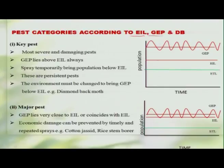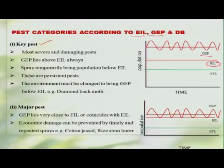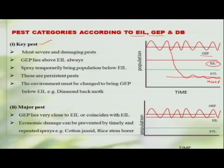A third set of categories can be made based on the economic injury level and the general equilibrium position. We can call a pest a key pest — looking at the graph, in the case of key pests, the general equilibrium position of the pest population will be much higher than the economic injury level. We need to frequently intervene with management practices to bring the population below the economic threshold level. Such pests are quite severe and cause huge economic loss. The best example is the diamondback moth on cabbage and cauliflower.